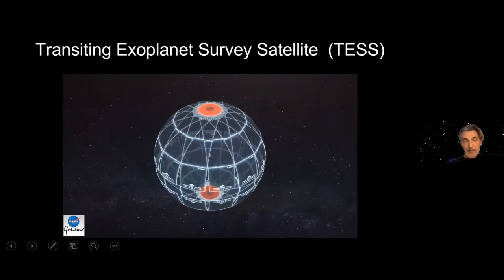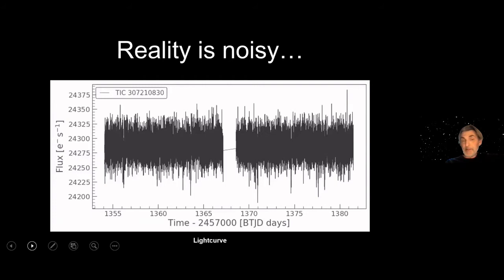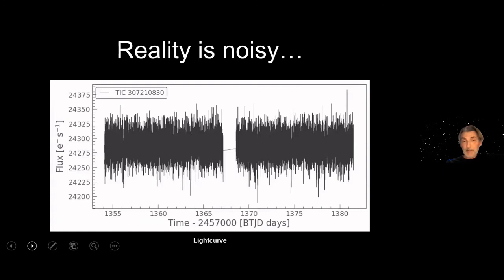This animation shows the transit method. You see an artist's impression of a star with a planet moving in front of it, causing a dip in brightness. The idea is that using a camera from TESS or other surveys you can detect the passing of an exoplanet — or something else — in front of the star. In reality, a light curve showing these brightness dips is quite noisy. Astronomers refer to the brightness as flux on the vertical axis, with time on the horizontal axis. It's very hard to recognize patterns here.